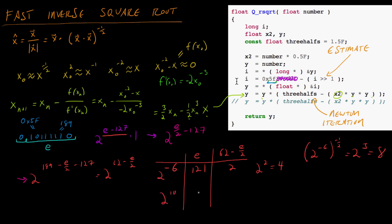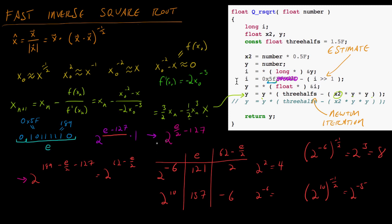If I have two to the 10, my E value has to be 137 because 137 minus 127 is 10. Then 62 minus 137/2 gives me negative six, and two to the negative six is about 0.016 — a small number. The actual inverse square root of two to the 10 should be about two to the negative five. Two to the negative six is pretty close. You can see that this magic number subtracted through the bits of the floating point number actually gives a fairly decent estimate — and that's just with our simplified 0x5F number with zeros; the actual number gives an even better estimate.